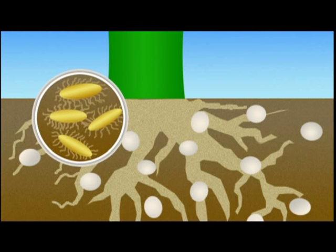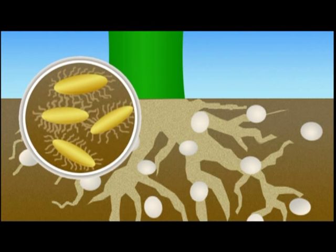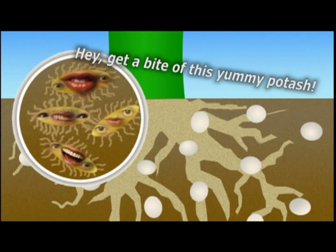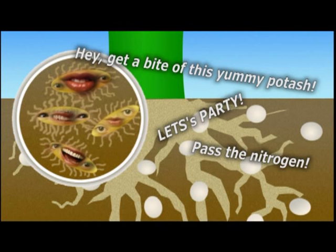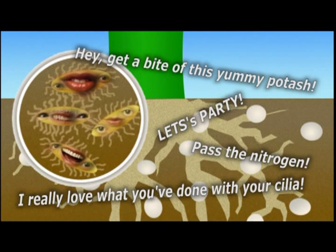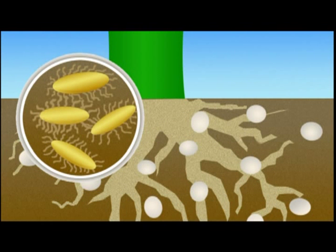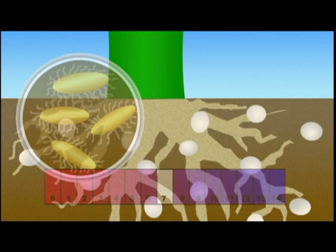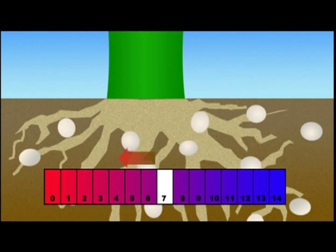Why is this important? First, neutral soils are alive. Microbial bacteria live within the soil. These bacteria break down fertilizers such as nitrogen, potash, and phosphate into nutrients that are then fed to root systems as your plants grow.